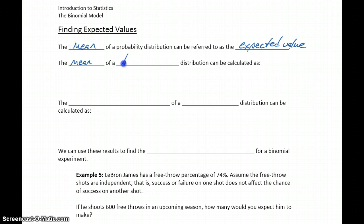The mean of a binomial distribution can be calculated as n, the number of trials, times p, the probability of success.